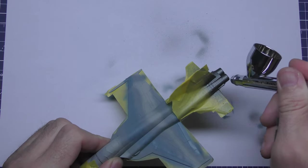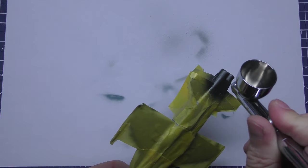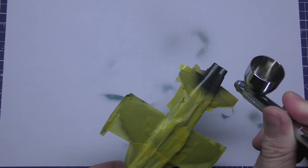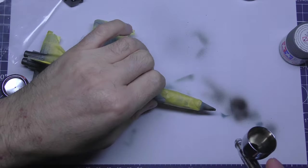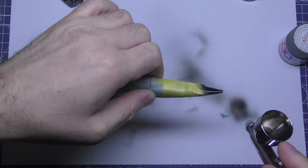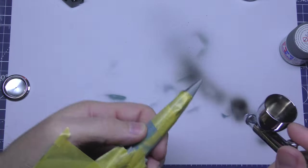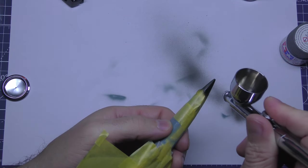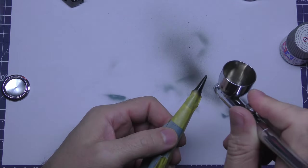This is Tamiya Gunmetal X10. Again, it isn't what it tells you on the kit, but it's as close as I can find. And a bit of flat black for the front, just on the nose cone. And that, technically, is most of the spraying done now.